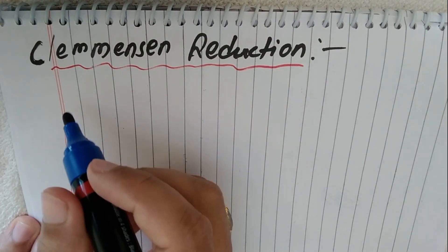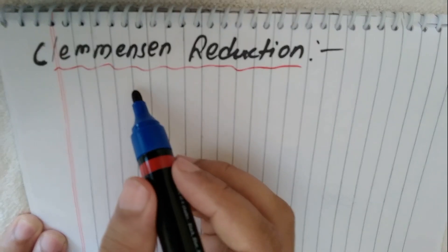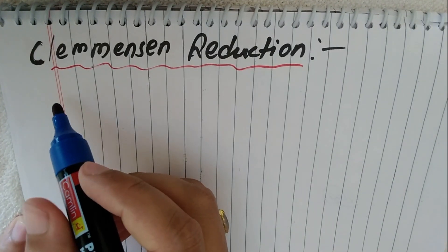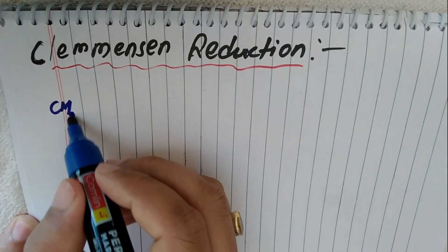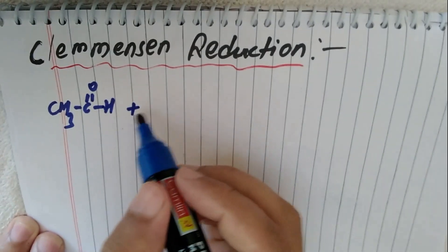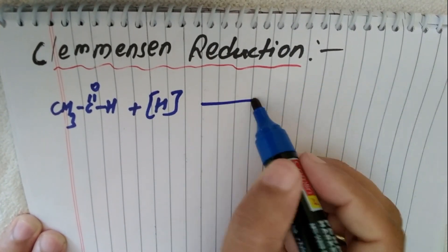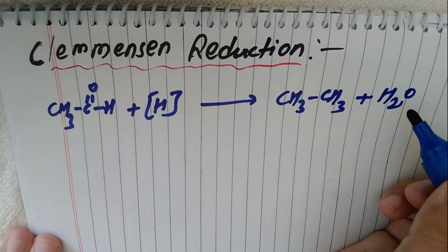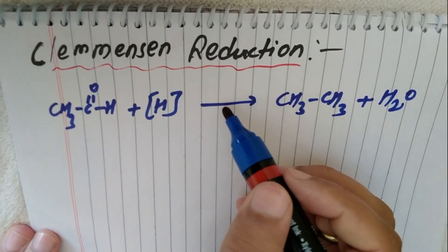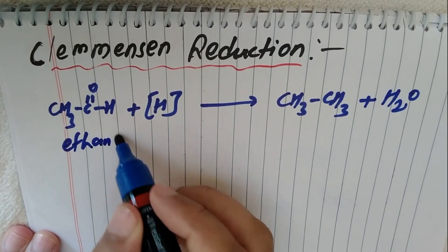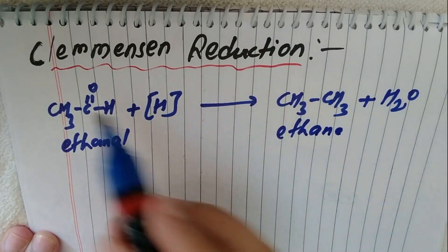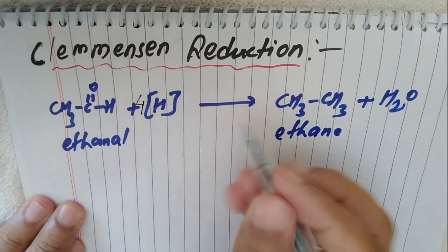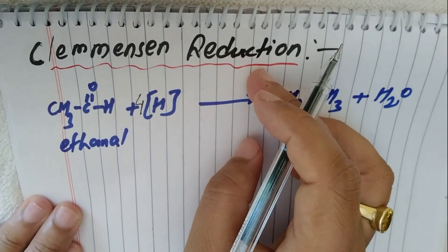In Clemmensen reduction, this involves the reduction of aldehyde or ketone with zinc amalgam (Zn/Hg) and concentrated hydrochloric acid. Ethanal gives ethane in the same way, and the mechanism is the same — oxygen is removed, water is formed, and two hydrogens are added, so four H total are used. The reagent is different for Clemmensen reduction and Wolff-Kishner reduction.